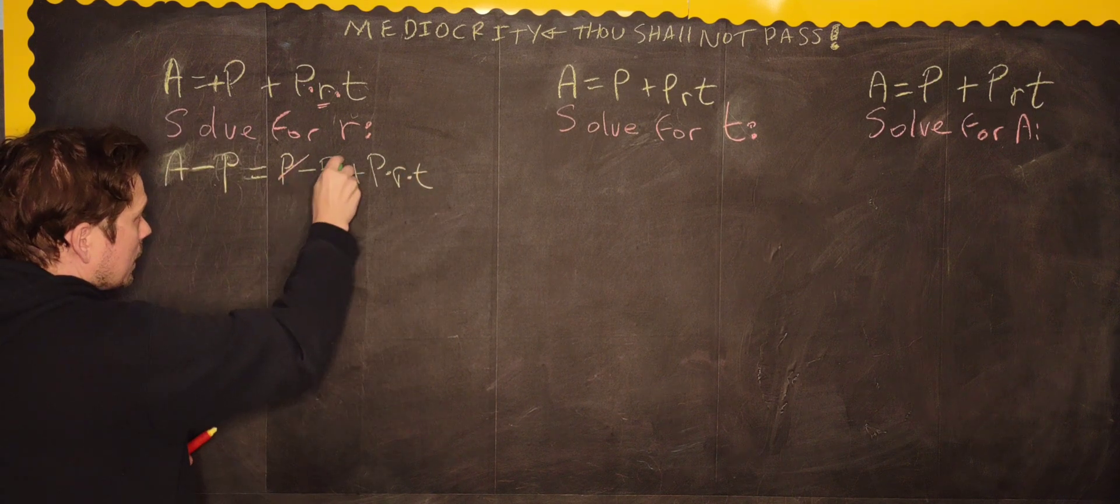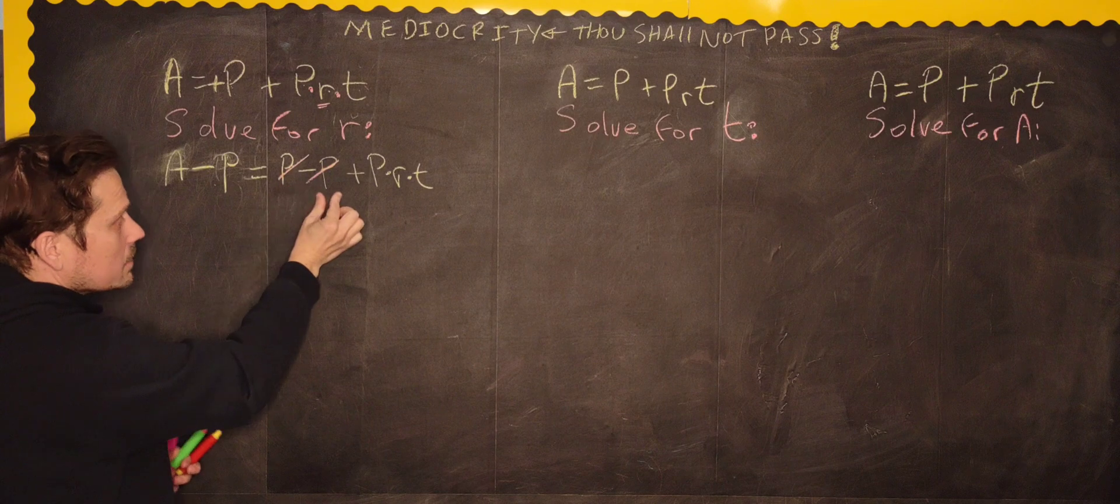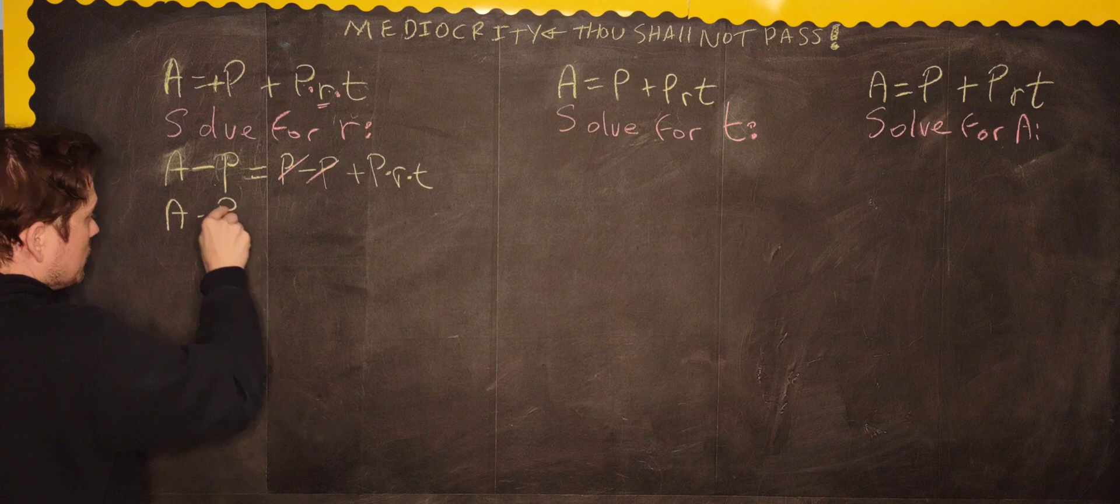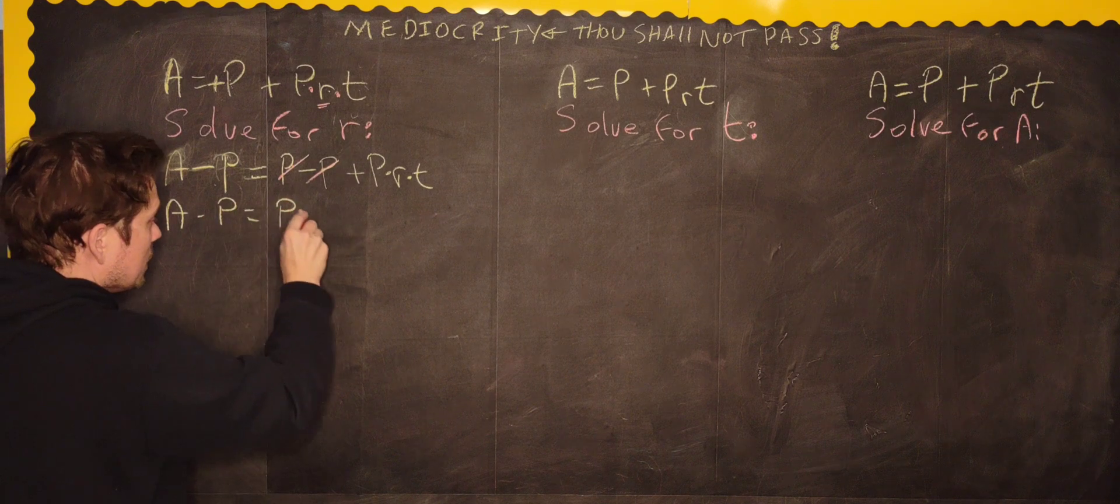Now, these are opposites. One is positive, the other is negative, so they cancel off. That's going to leave us A minus P is equal to PRT.